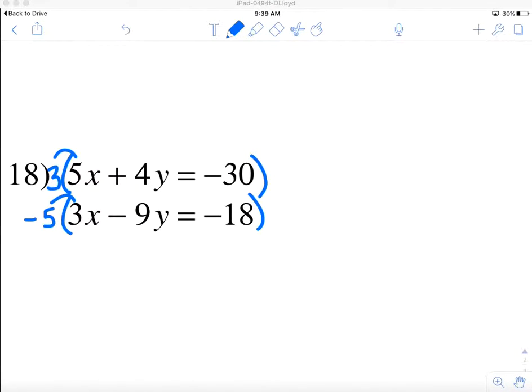I'm going to create my first equation multiplied by 3. 3 times 5x is 15x. 3 times 4y is 12y, and 3 times negative 30 is negative 90.